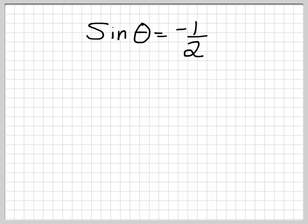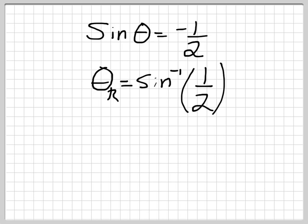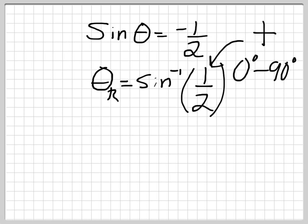The way we do that is: theta r equals sine inverse of whatever you have, except you take the positive of it. The reason it's always positive is because your reference angle is between 0 and 90 degrees. If you put a negative in there, you're not guaranteed an angle between 0 and 90. So I don't even need to remember what sine of 1/2 equals — I can just throw it in my calculator and it spits back 30 degrees. So 30 degrees is my reference angle.